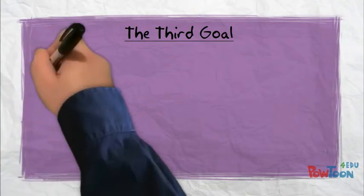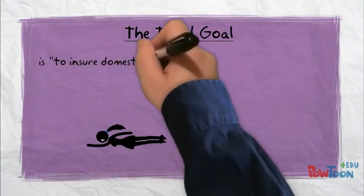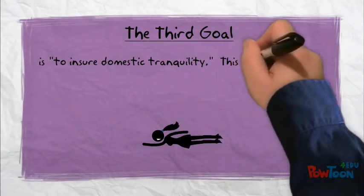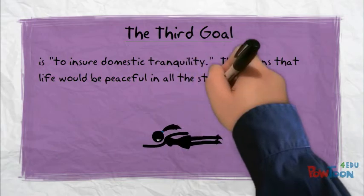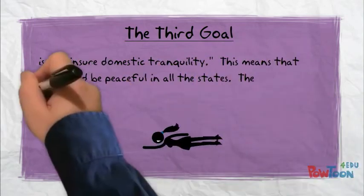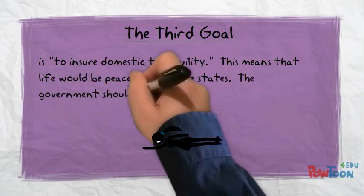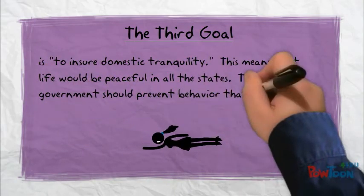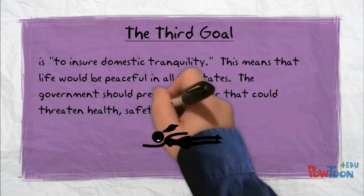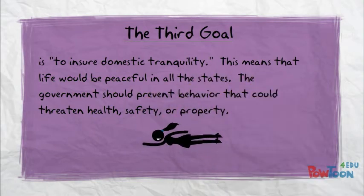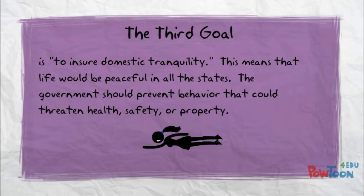The third goal is to ensure domestic tranquility. This means that life will be peaceful in all states. The government should prevent behavior that could threaten health, safety, and property.